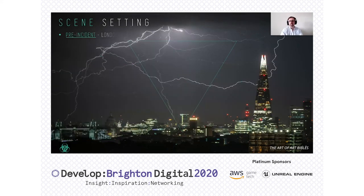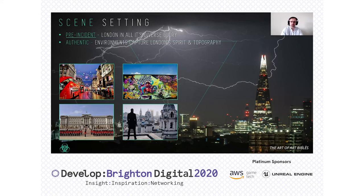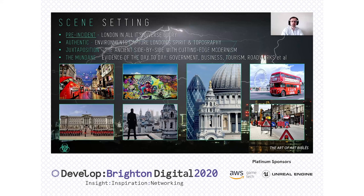Talking about scene setting: the pre-incident — all of London in all of its diverse glory — trying to make sure it's authentic, feels like London, has the right topography, not just Big Ben right next to the Tower of London. London is ancient and glorious, so take advantage of that. We have cutting-edge modernism right next to the old Roman walls or the Monument to the Fire of London. There's huge diversity there that we can use to good effect — and the mundane too: the roadworks, the tourism, what was going on beforehand.